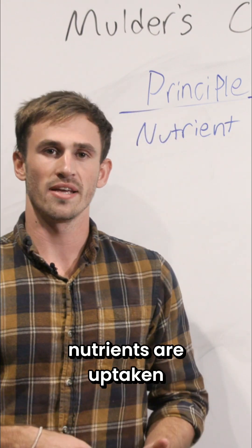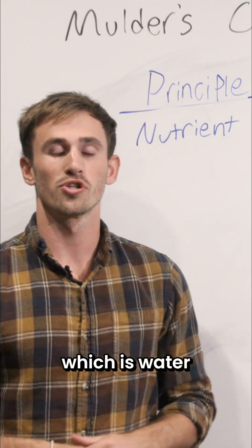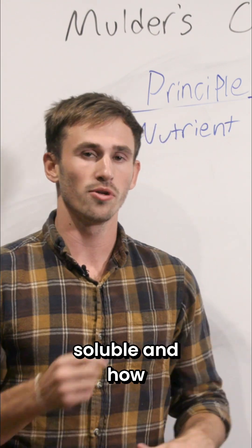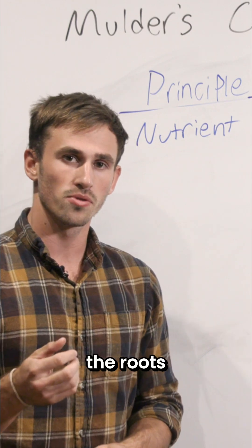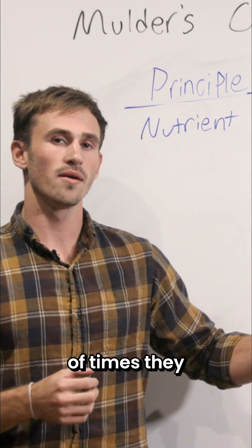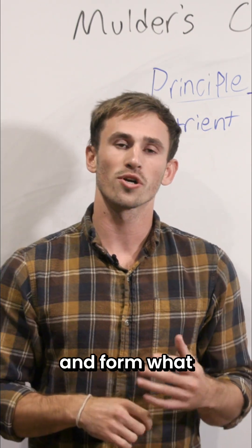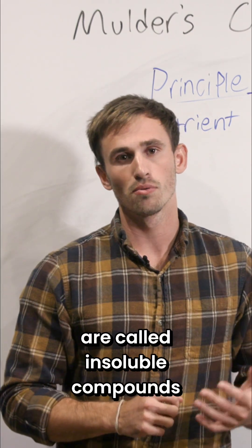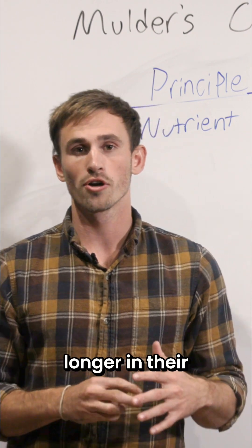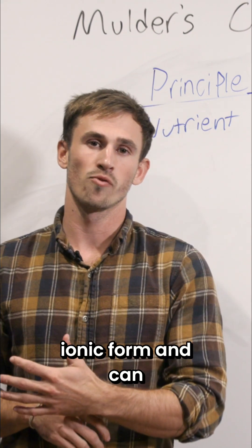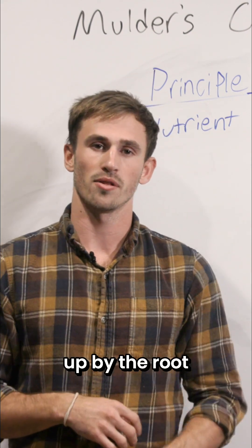Nutrients are taken up in their ionic form, which is water soluble, and that's how those nutrients get into the roots. But a lot of times they can interact with other nutrients and form what are called insoluble compounds that are no longer in their ionic form and can no longer be taken up by the root.